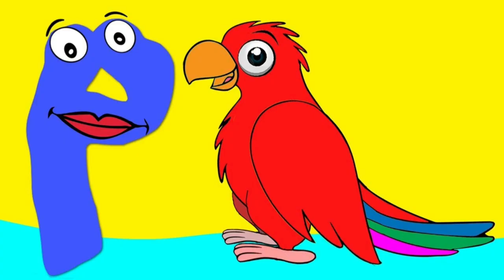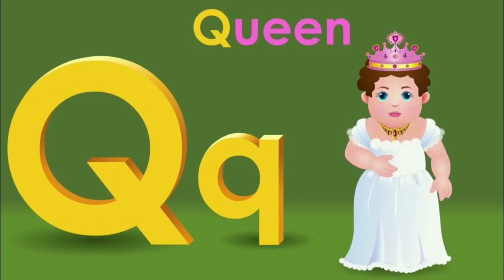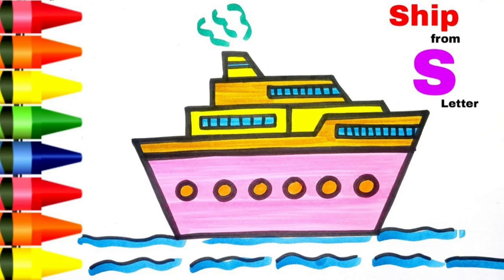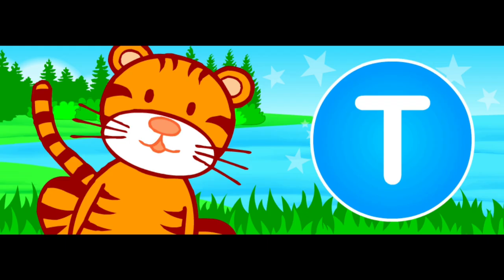P for Parrot. Parrot. Q for Queen. Queen. R for Rose. Rose. S for Ship. Ship. T for Tiger. Tiger.